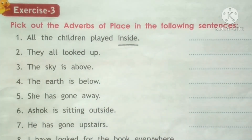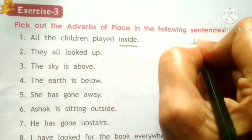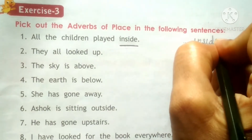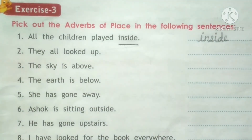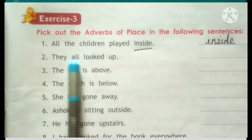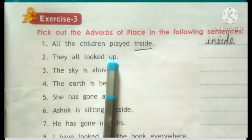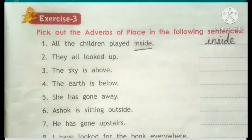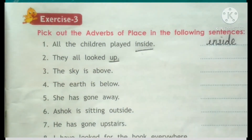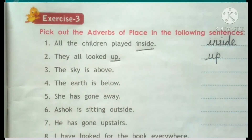So you have to write the answer: inside. Second sentence: They all looked up — sab ne upar dekha. Place kaisi hai? Up — upar. So write here: up.